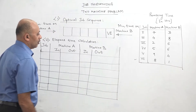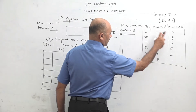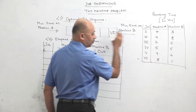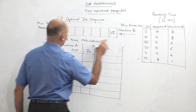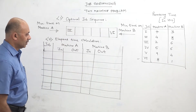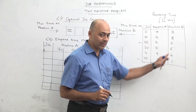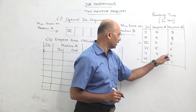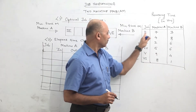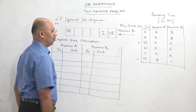Do not consider the time of job 6. Now compare the remaining table. The minimum time is 2, that is job number 3, and it is on machine A. So job 3 will come from the left hand side. Now 3 is over. Compare the remaining values: 7, 3, 4, 8, 5, 6, 9, 4. The minimum is 3, on machine B. That is job number 1. So job number 1 will come from the right hand side. Write here job 1.